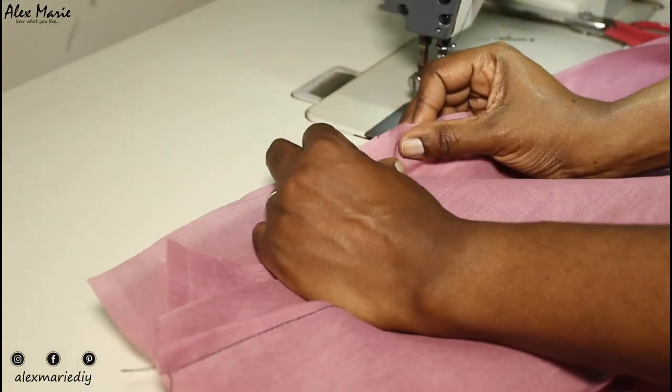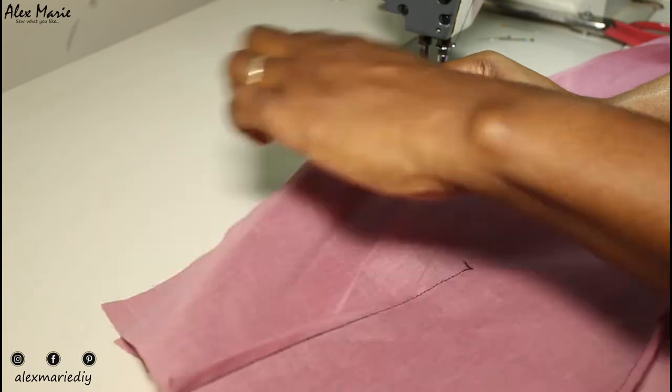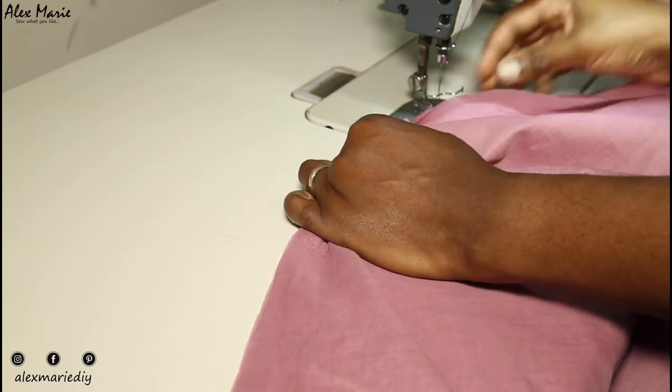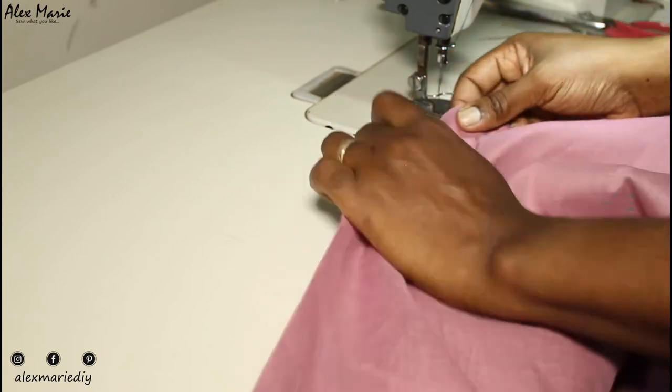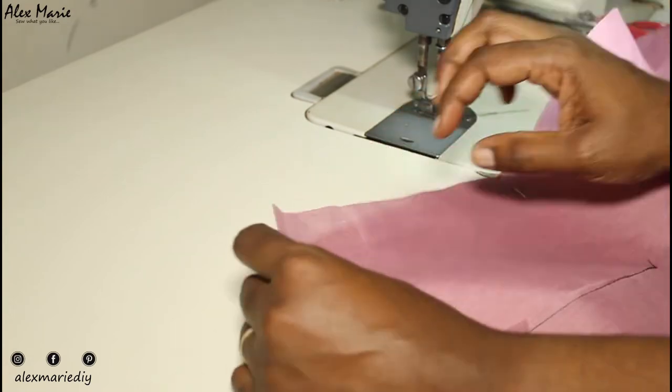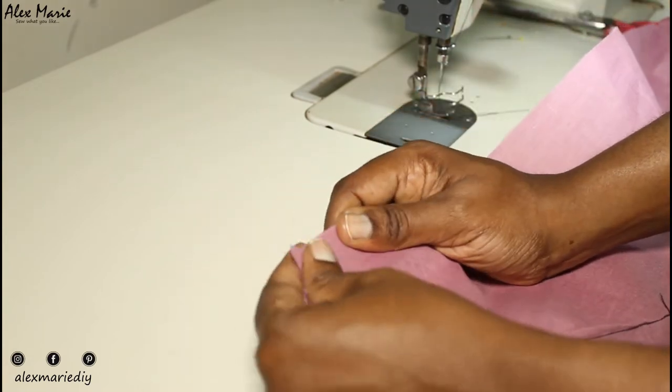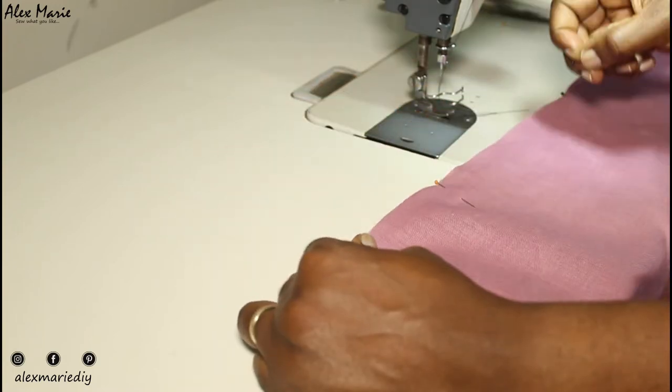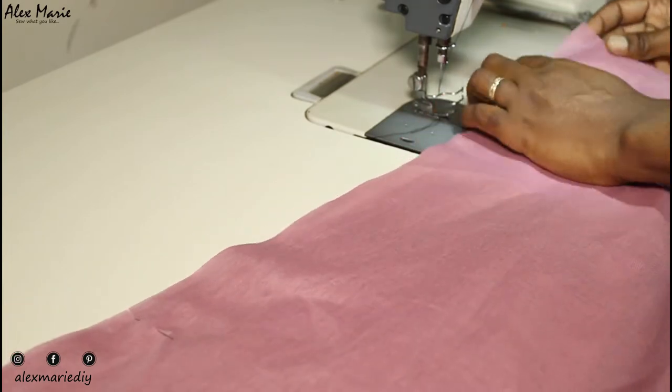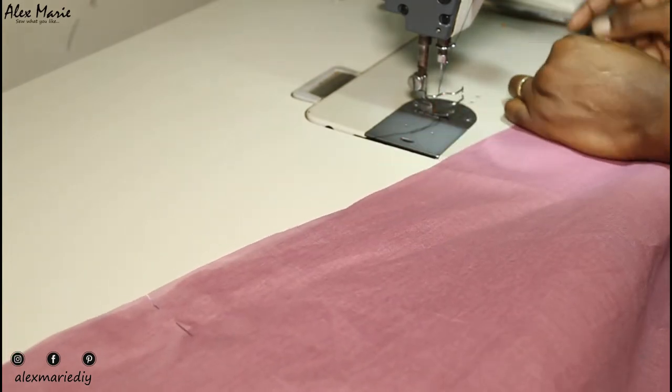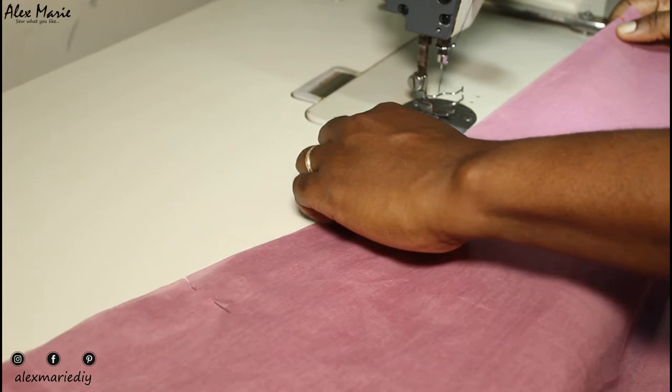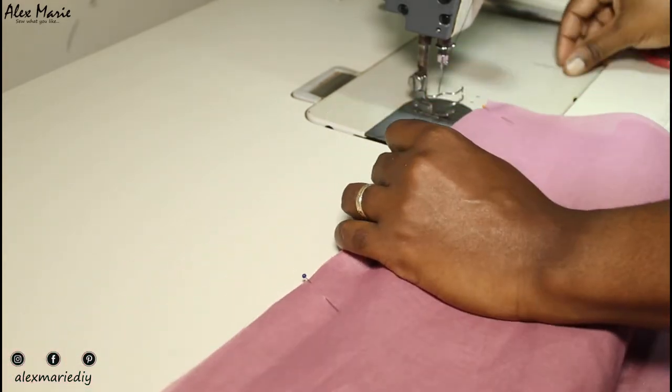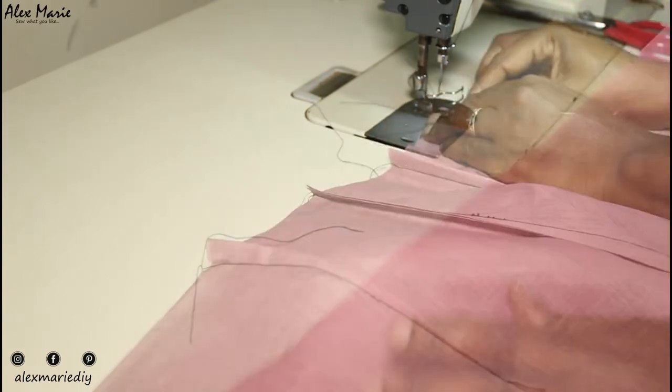At the sides you have a notch at the hip line, you have another notch at the knee line, so you're going to pin out the notches first to make sure everything is aligned and then you should put some pins in between. Once everything is pinned down, go ahead and sew.